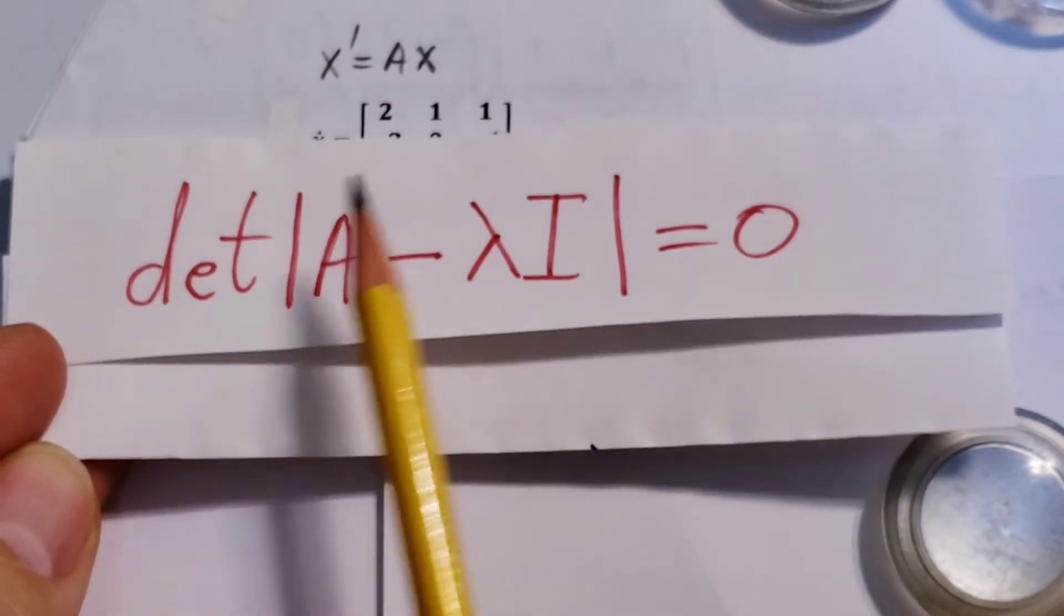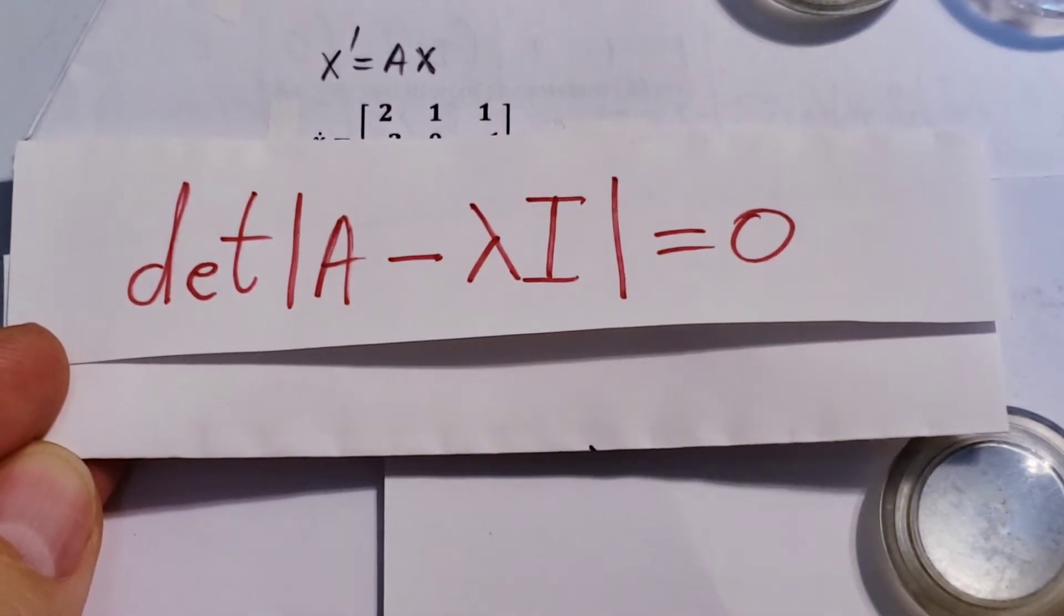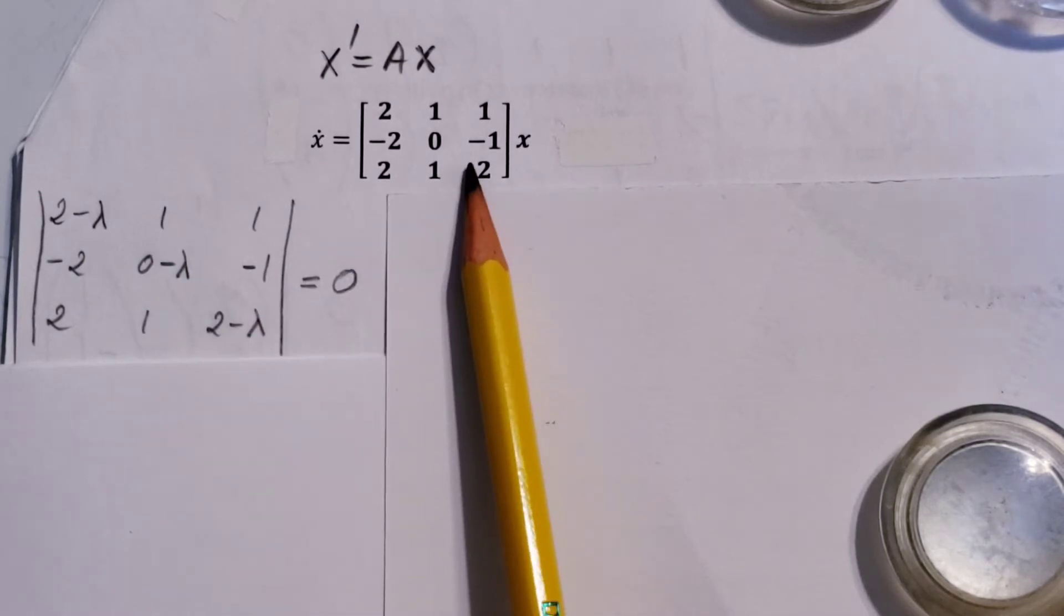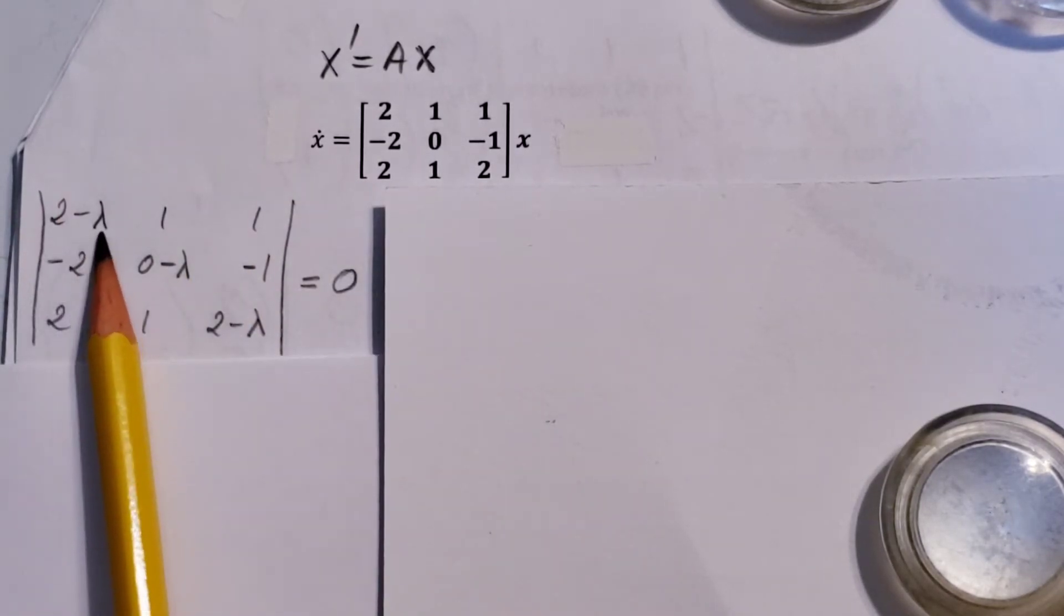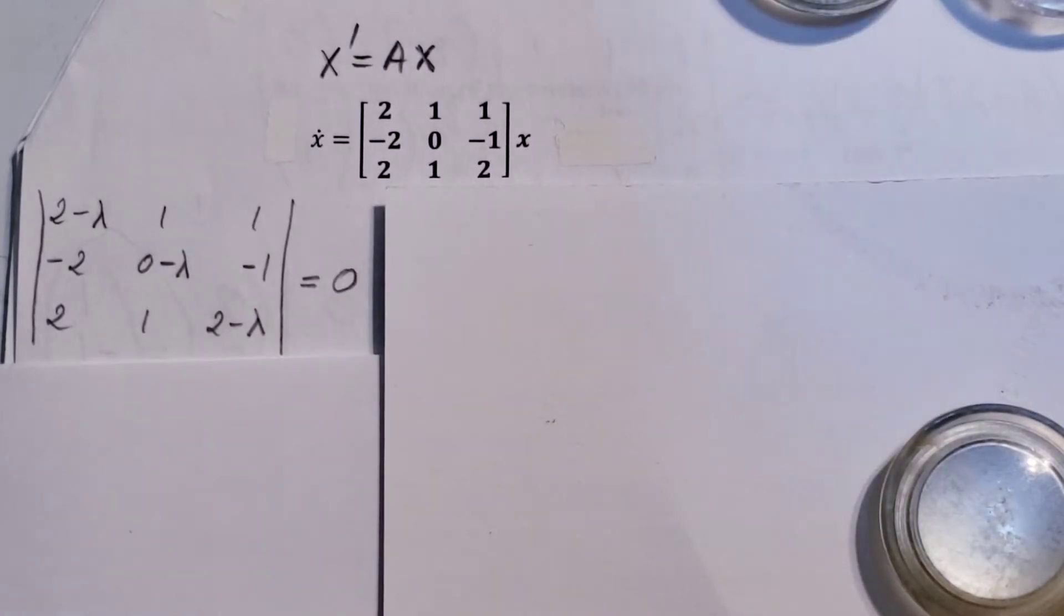The determinant of matrix A minus lambda I equals 0. That's what we can see here. Our matrix A with the lambda subtracted from it on the diagonal equals 0. Now you could find the determinant of this one with a calculator, but here we're going to do it by hand.